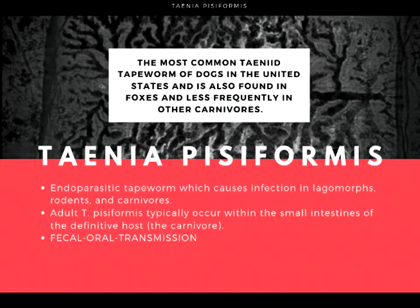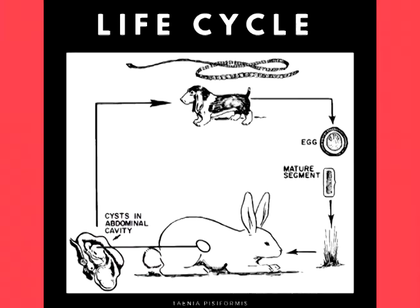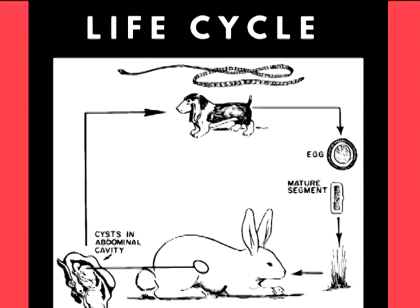Lagomorphs, the intermediate host, are infected by fecal contamination of grasses and other food sources by the definitive host. It is the most common Taenia tapeworm of dogs in the United States and is also found in foxes and less frequently in other carnivores. Rabbits serve as an intermediate host.